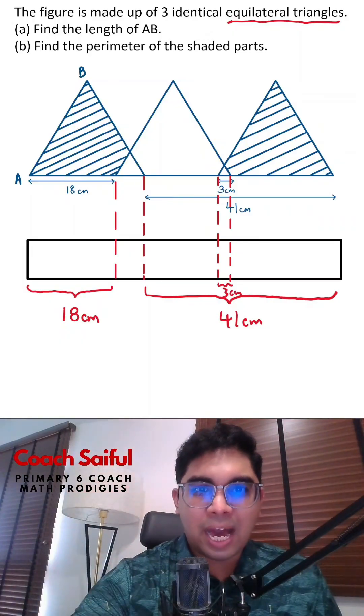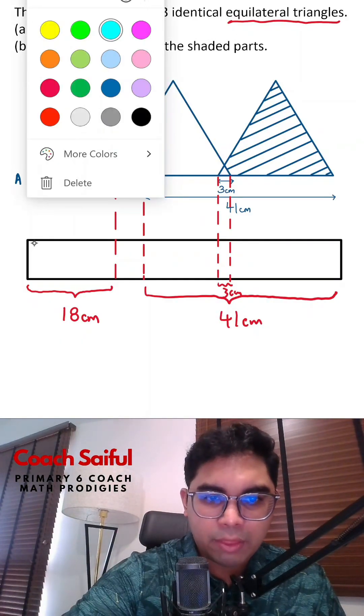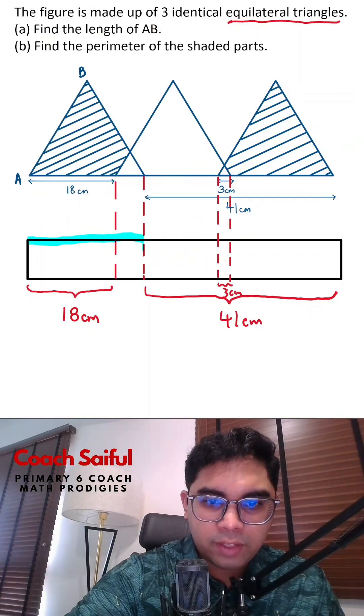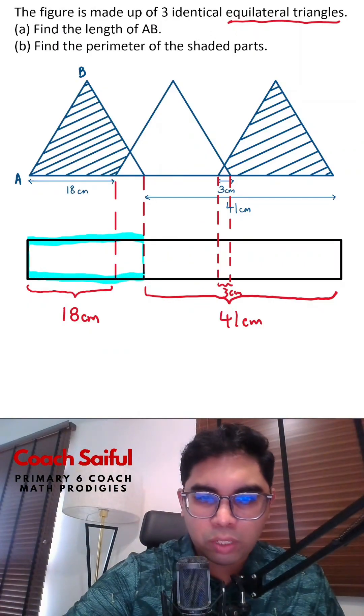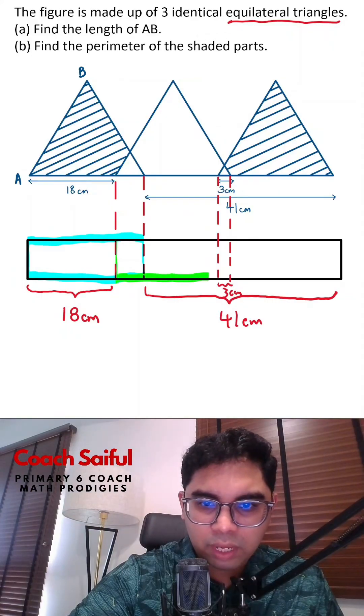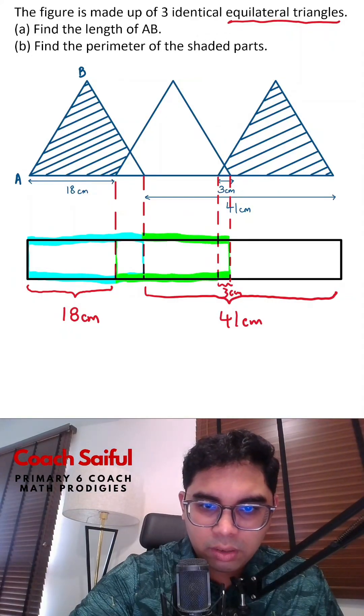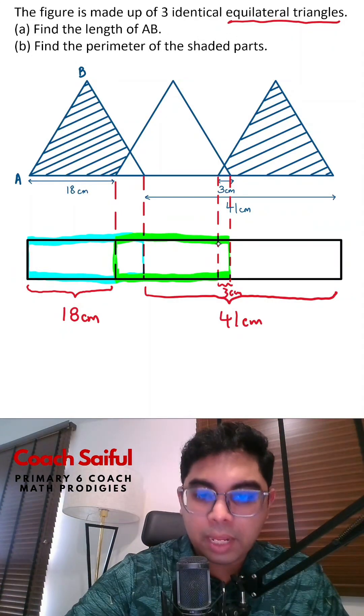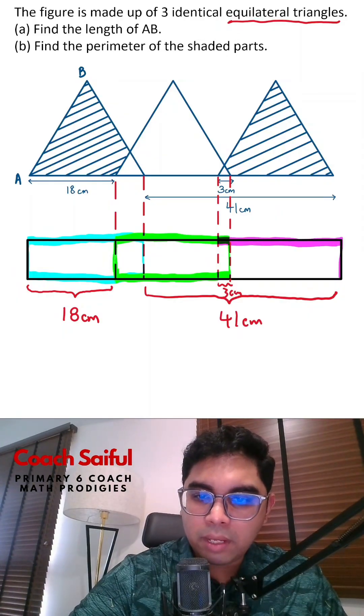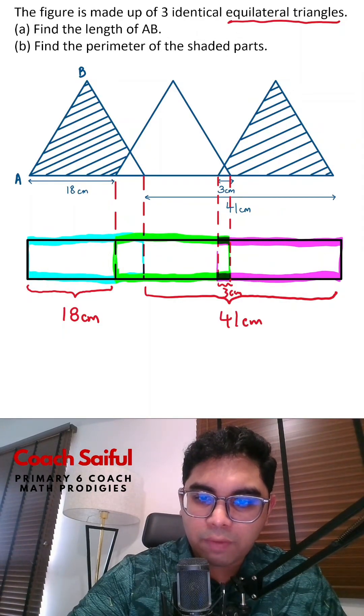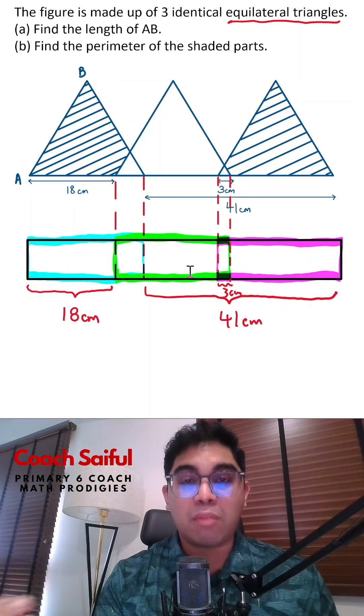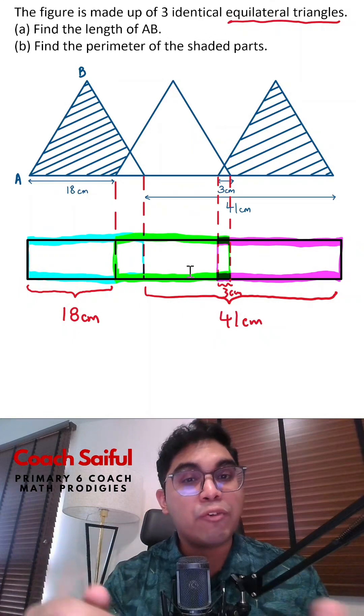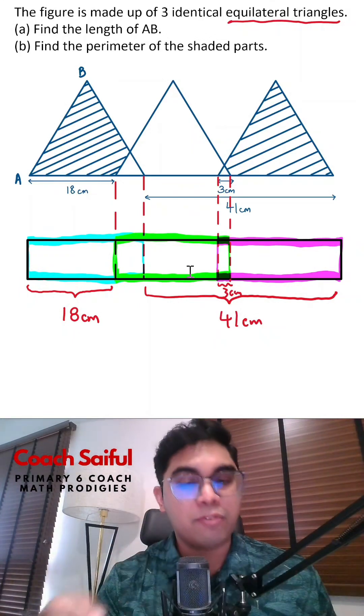So I'm going to use a highlighter to show you the length of the first triangle up to here, right? Then we use the green one to show you the length of the second triangle, which is up to here. And then I'm going to use the purple highlighter to show you that this is the length of the third triangle. So remember one thing, the blue, green, and pink segments are all the same length because they're the same length of the equilateral triangle. They're identical. Remember this, right?